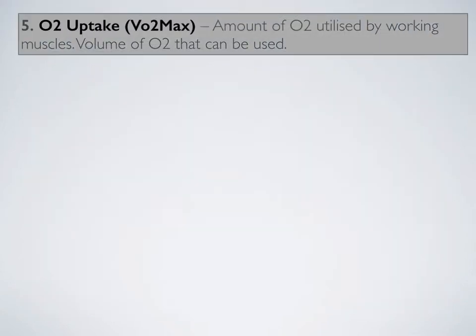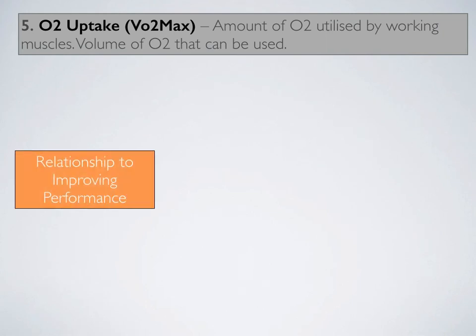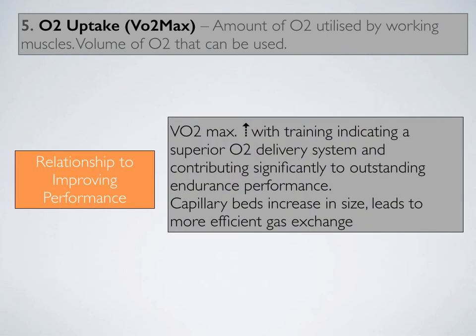Referring to oxygen uptake — the amount of oxygen utilized by working muscles, referred to as the volume of oxygen that can be used — VO2 max, or oxygen uptake, increases with training. It indicates a superior oxygen delivery system, which contributes significantly to outstanding endurance performance. More oxygen is able to be delivered to working muscles as a result of training, and capillary beds in the muscles increase in size, leading to a more efficient gas exchange so more oxygen can be delivered and used by those muscles.